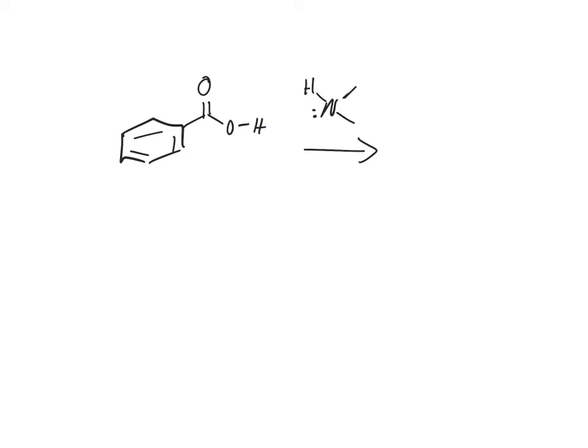Looking at a carboxylic acid reacting with an amine. The first thing that happens is the carboxylic acid is, of course, an acid. The amines are really good bases—they're electron-rich, so the amine is going to deprotonate the carboxylic acid.